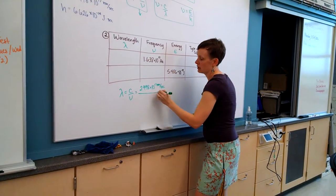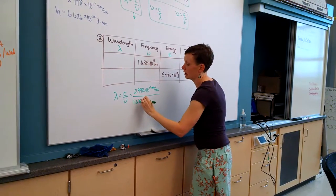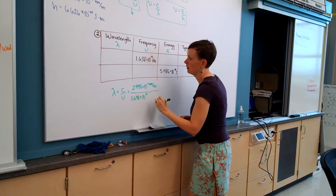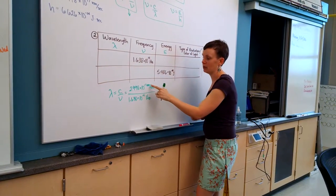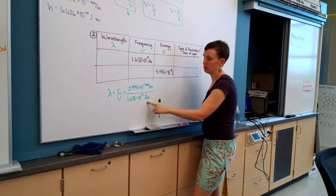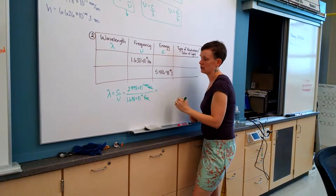So I'll put that here, 2.998 times 10 to the 17th nanometers per second, divided by the frequency which was given to us in the data table, 1.638 times 10 to the 15th hertz. If you remember, hertz means per second, so nanometers per second divided by per second. The per seconds cancel, and our answer is going to give us nanometers.